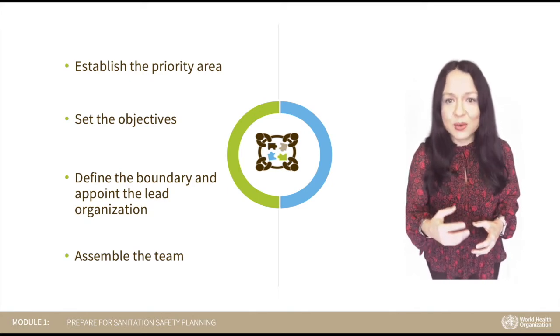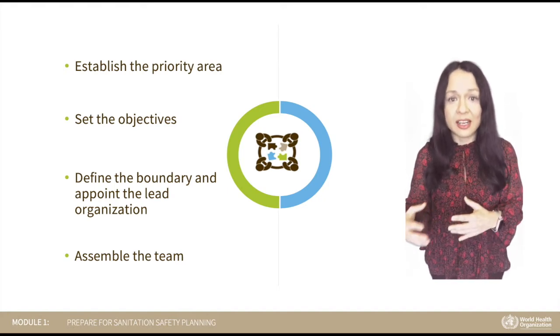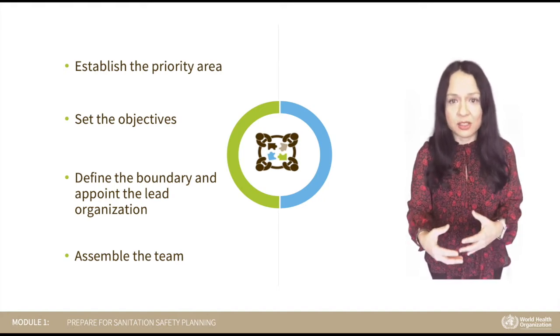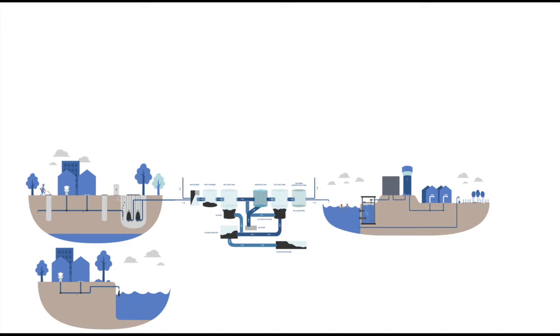Establishing priority areas helps us to identify the focus of the SSP process within a large geographical area like a city or district. Let's imagine a typical city in a developing country. We could have an area of the city whose inhabitants are connected to a sewer system, and some of the collected wastewater is transported to a wastewater treatment plant. However, as we move from the city center, the households only come with on-site systems such as septic tanks and cesspools.